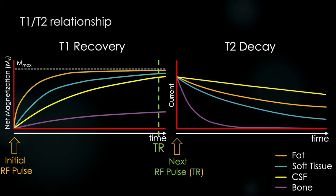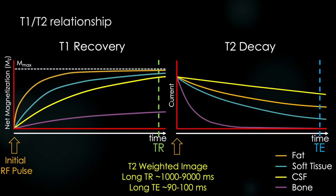When TR is long and we've allowed each voxel to fully rebuild their net magnetizations, the starting amplitudes of the T2 decay curves are similar. There aren't large differences at the start, but as the curves decay at different rates as time goes on, the differences get larger and larger. So if we choose to compare these curves at a long time of echo TE, the differences in our measurements will mainly be due to the different T2 decay rates. This would produce a T2 weighted image.